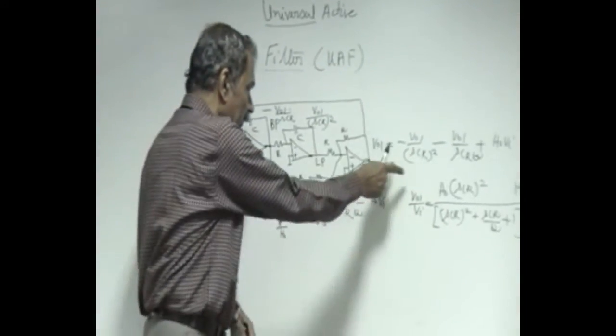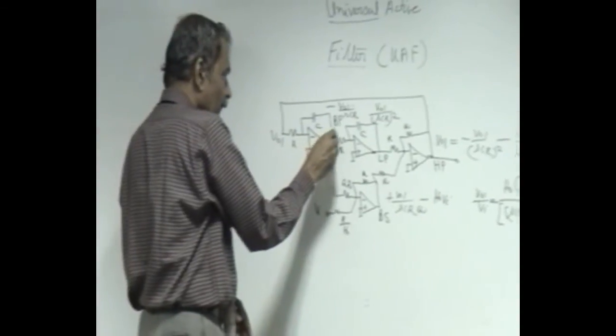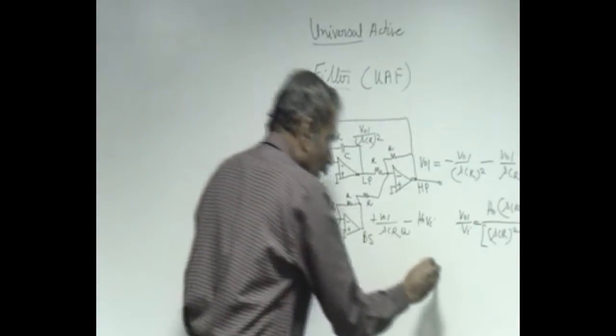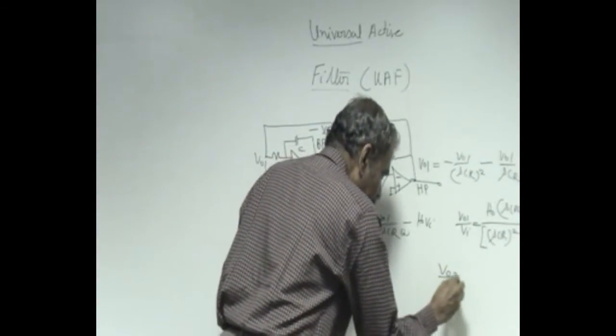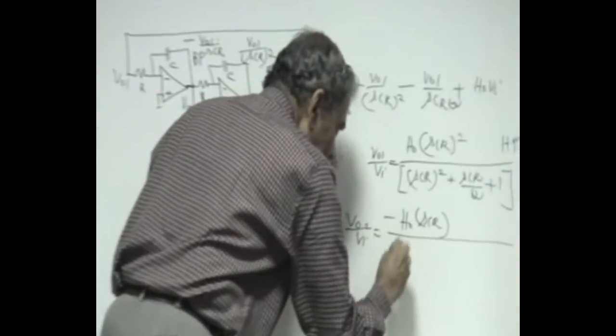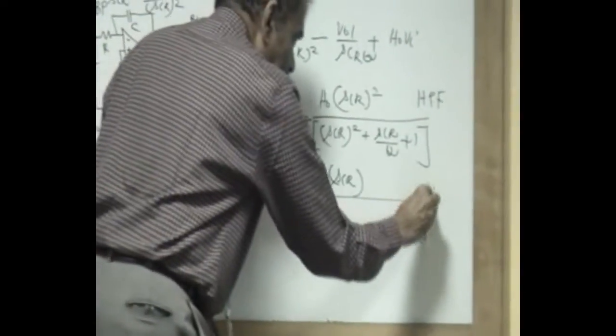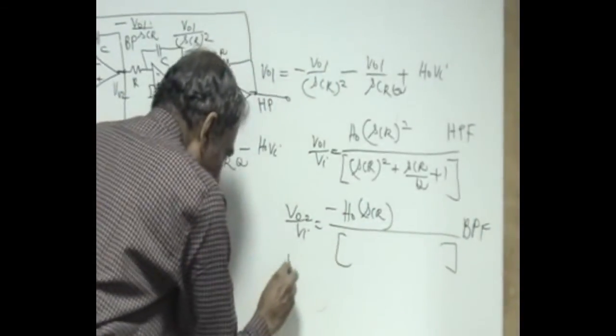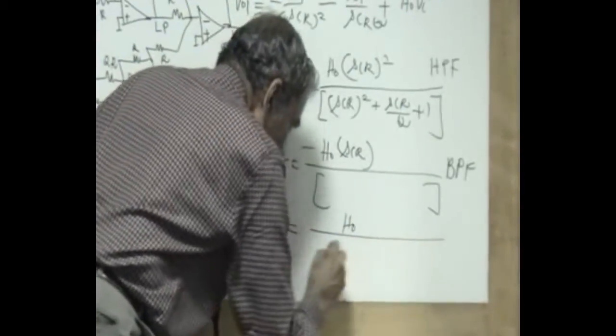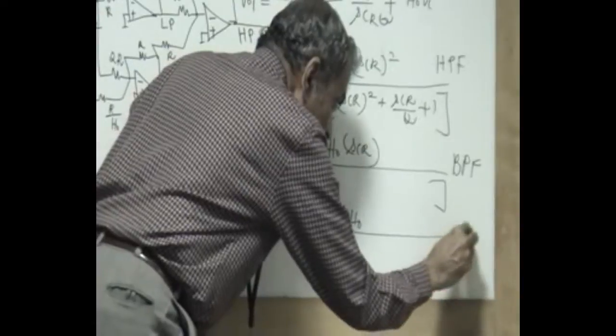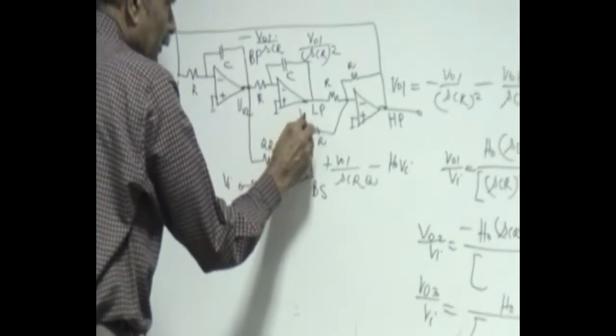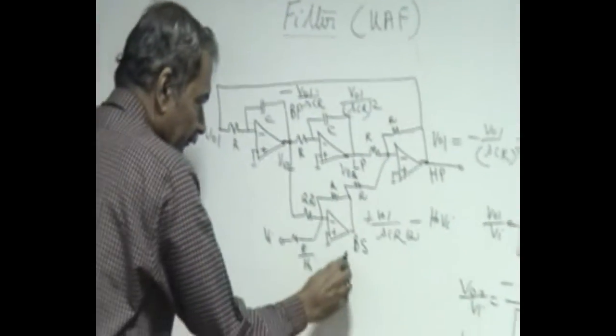Now this particular output of the high pass is given to this and it becomes band pass output. So here V naught 2 is going to be band pass H naught into SCR once again it gets integrated we get band pass and V naught 3 by V_I is low pass one more integration the denominator remains the same. So these are the outputs at these various points V naught 3.